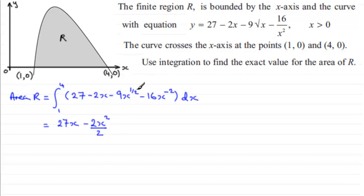For minus 9x to the power half, we've got minus 9x add 1 to the power, that'll be 1 and a half. Try and avoid writing 1 and a half, make it 3 over 2 top heavy there, and then we divide by that new power, 3 over 2.